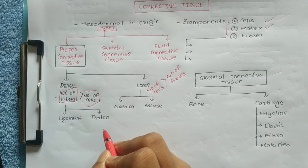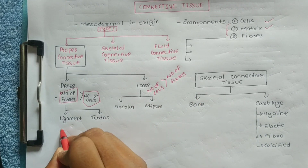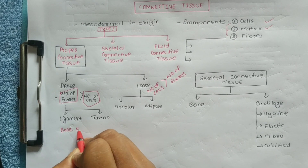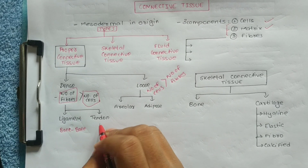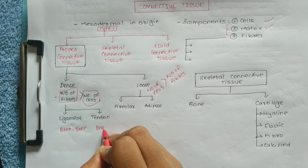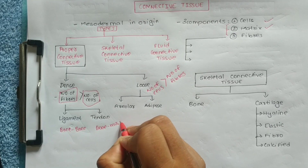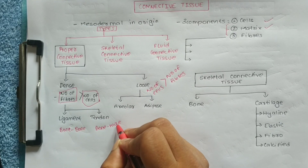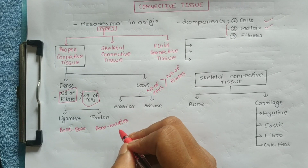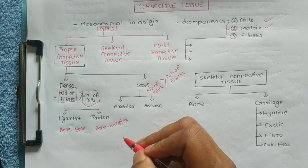Ligaments connect bone to bone, while tendons connect bone to muscle. The structure connecting muscles is called a tendon.